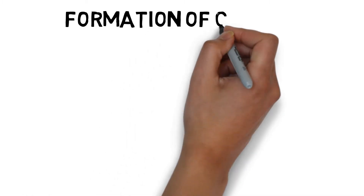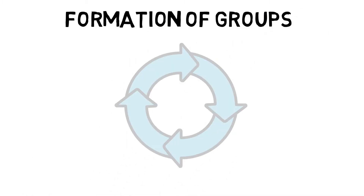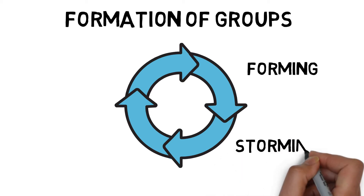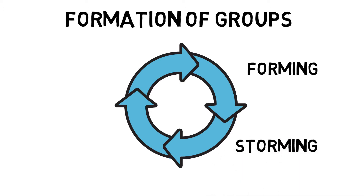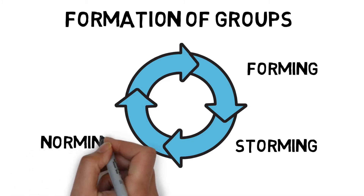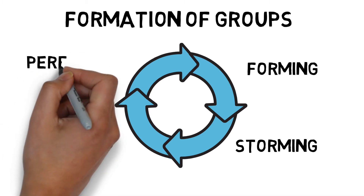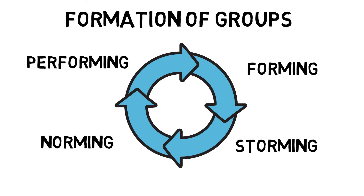Tuckman's model suggests that there are four stages for the formation of groups. Forming, in which members get to know each other and develop roles. Storming is where conflict between members occurs and individuals try to establish their positions — it is important that the coach drives the group through this stage. Norming reflects the stage where cooperation replaces conflict and members agree on how to work together. And performing, in which there is total acceptance of roles and all members work towards the common goals as a well-functioning group.